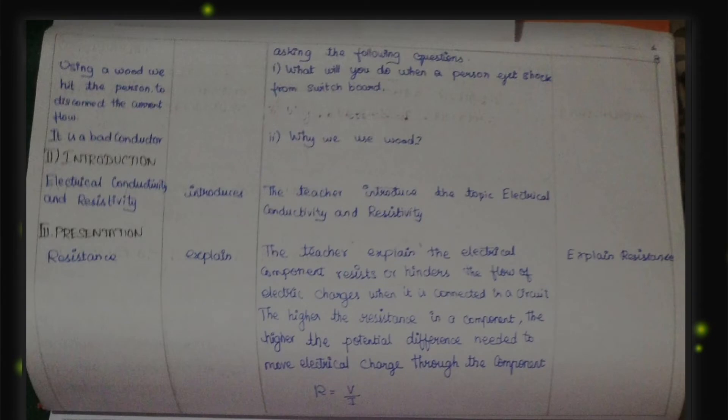In the motivation step, the teacher motivates the students by asking: what will you do when a person gets shocked from a switchboard? In the tabular column, the student answers: using a wood, we hit the person to disconnect the current flow. The teacher then asks why we use wood — the student answers it is a bad conductor.